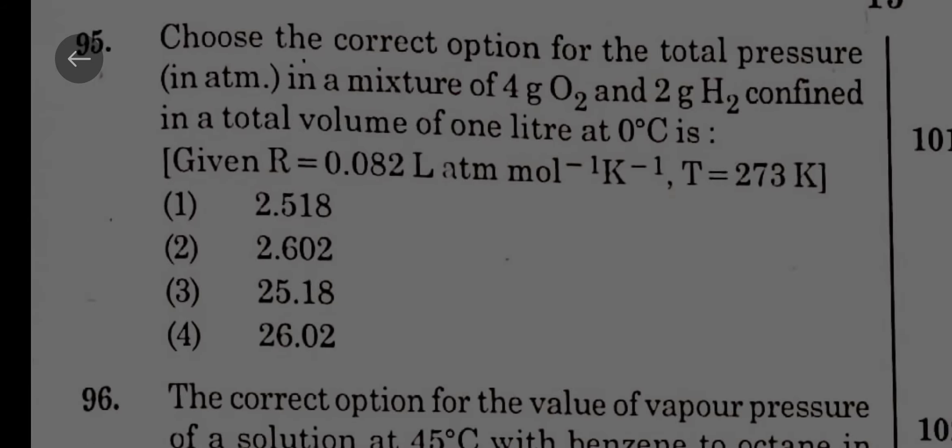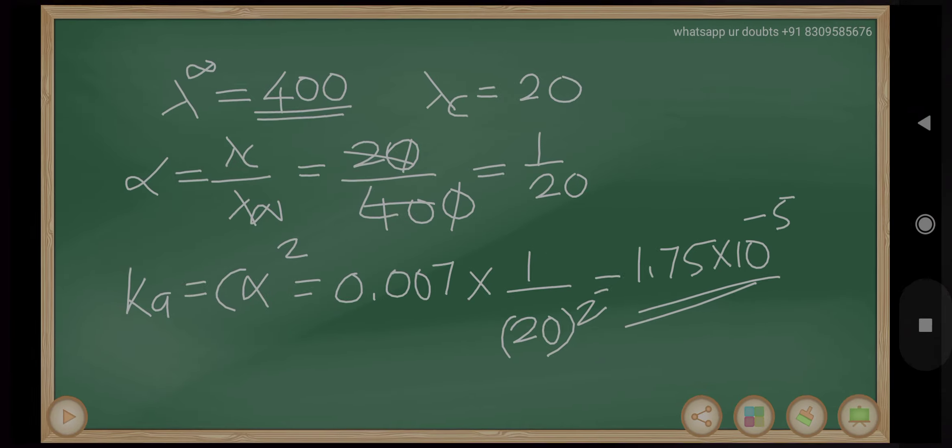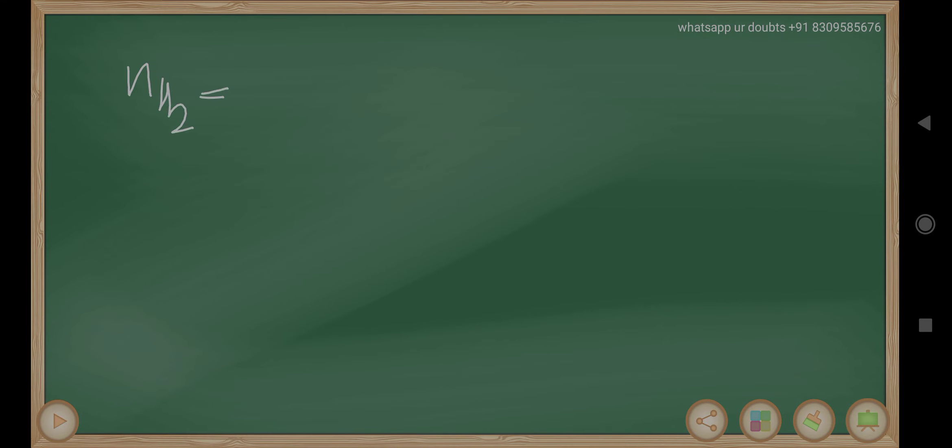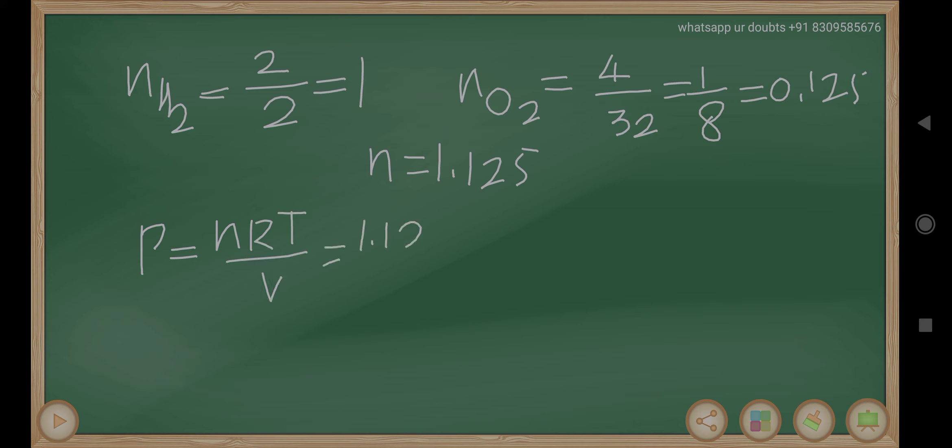Choose the correct option for the total pressure in atmospheres in a mixture of 4 grams of oxygen and 2 grams of hydrogen. Number of moles of hydrogen equals 2 by 2 equals 1, and oxygen 4 by 32 equals 1 by 8 equals 0.125. So total number of moles are 1.125. Then pressure equals nRT by V. 1.125 into 0.0821 into temperature 273 by volume 1 liter equals 25.18 atmospheres.